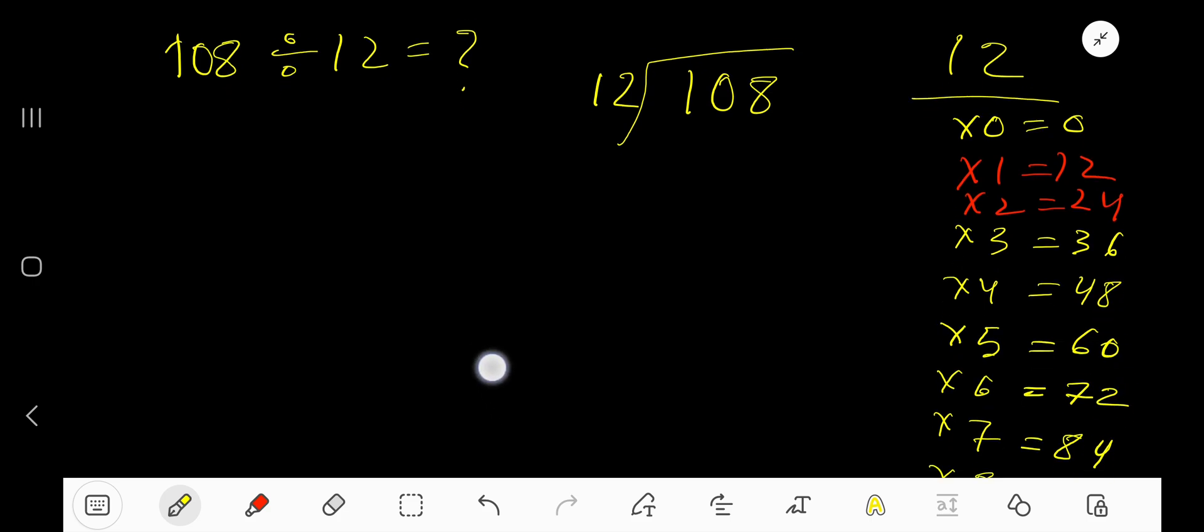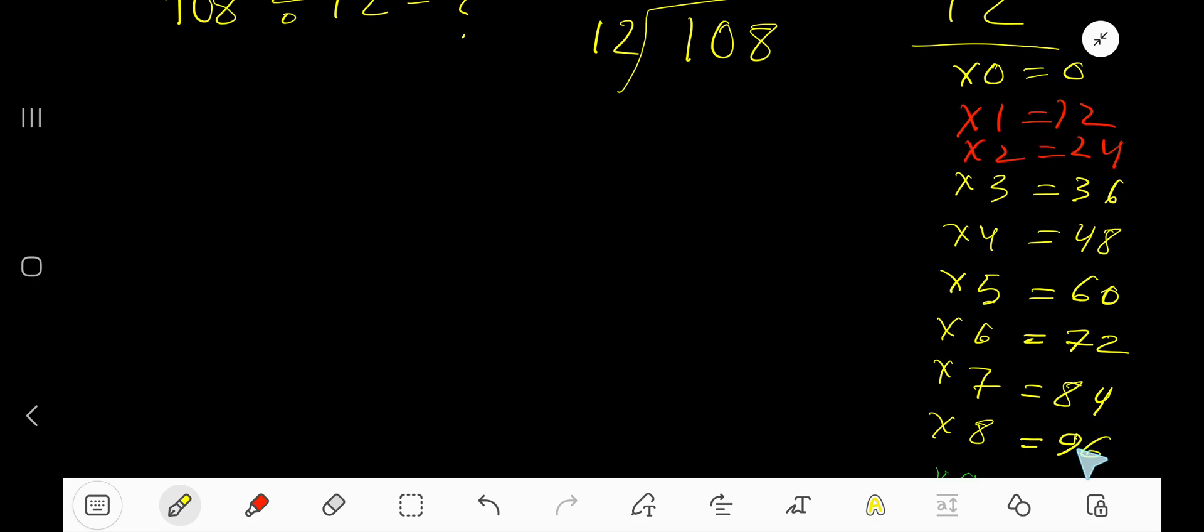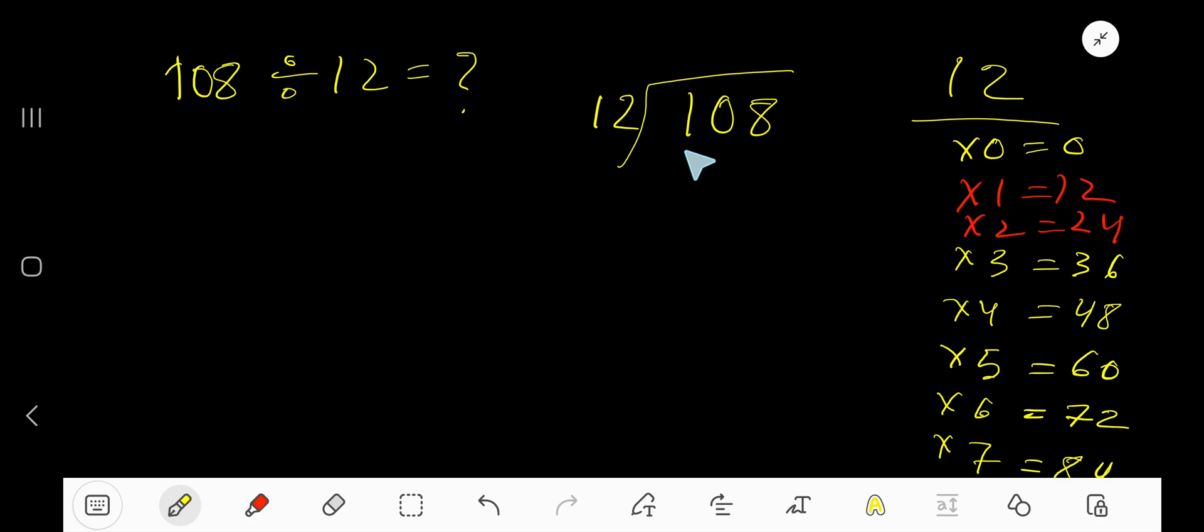72 plus 12 is 84, 84 plus 12 is 96. This process will continue. 12 goes into 1 how many times?